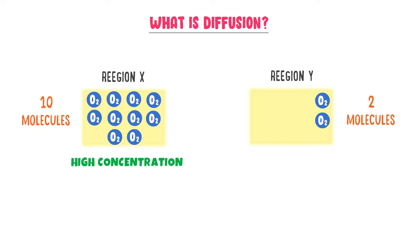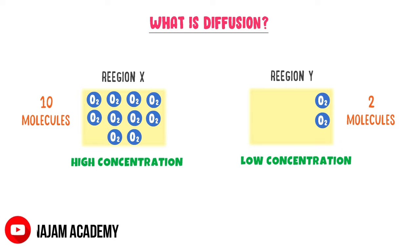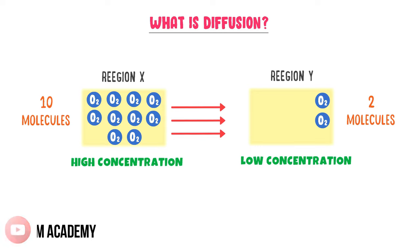Comparatively, region Y has a lower concentration of oxygen gas because it has only 2 molecules. As a natural process, molecules of oxygen gas move from region X to region Y — that is, from high concentration to low concentration.